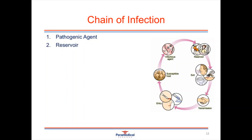The next link is the reservoir — where the infectious agent normally lives and multiplies. This can be a human, animal, insect, soil, or contaminated food or water source. There also needs to be a portal of exit, so the pathogenic agent can move from one reservoir to another via the respiratory tract, intestinal tract, sexual contact, open wounds, or blood and bodily fluids. There also needs to be an environment conducive to transmission — either direct, indirect contact or droplet transmission.